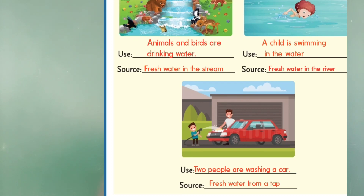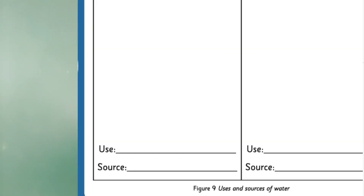Animals and birds are drinking water — the source is fresh water in the stream. The child is swimming in the water — the source is fresh water in a river, lake or pond. Two people are washing a car — the source is fresh water from a tap. Observe your surroundings and find two more instances of people using water, draw and describe them in Figure 9. Do it as home fun.